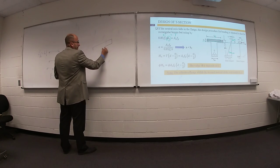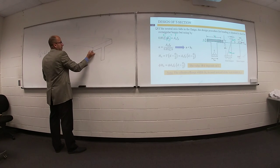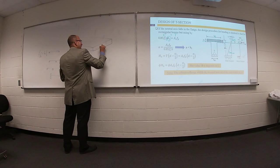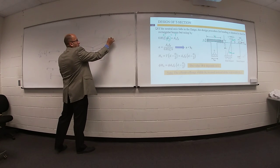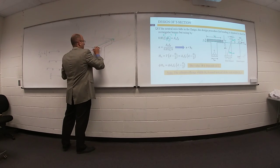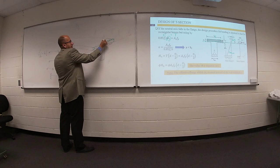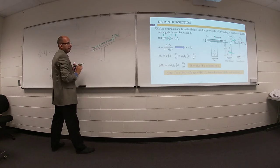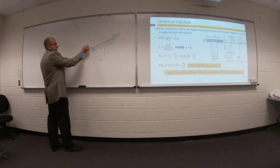It is your beam. Your neutral axis is within your flange. At the top, we have a compressive stress block. This value is 0.85 F prime C, with little depth A and the total depth C.